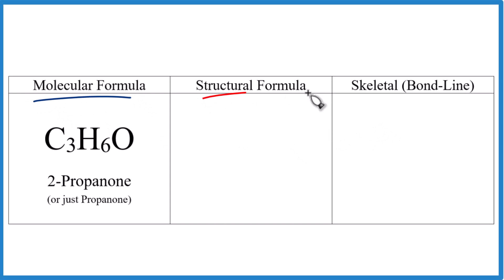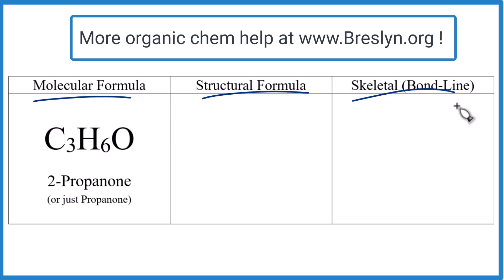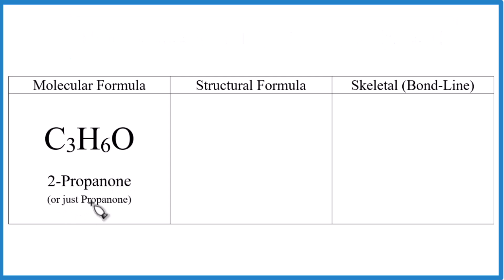Let's write the molecular, structural, and skeletal or bond line formula for C3H6O. This is 2-propanone. Sometimes it's just called propanone. This is what we're going to write the formula here for.